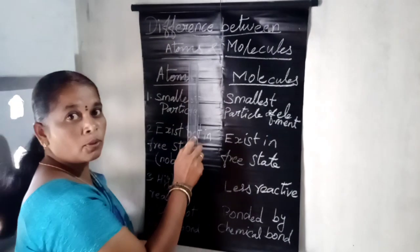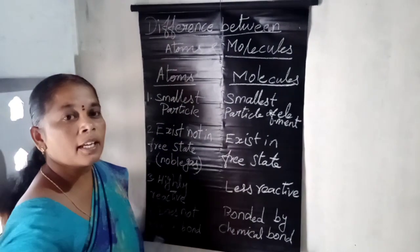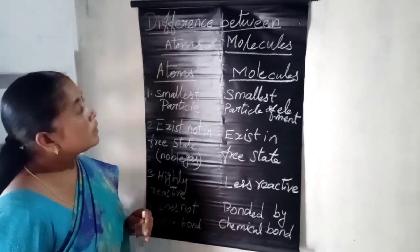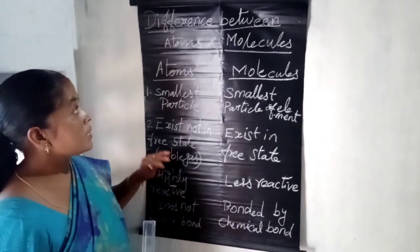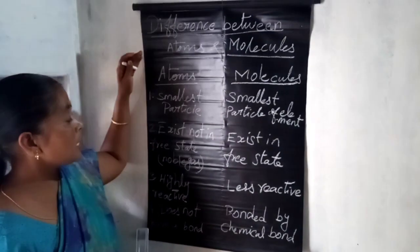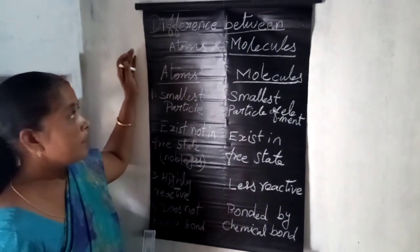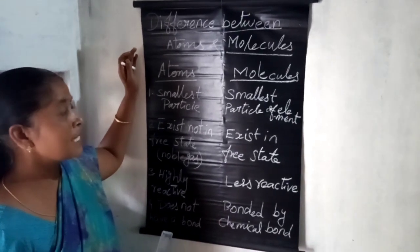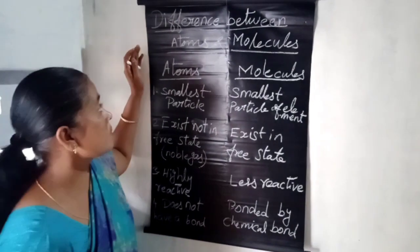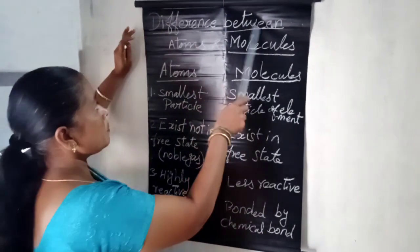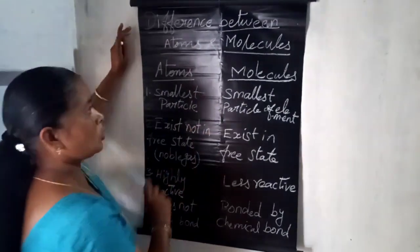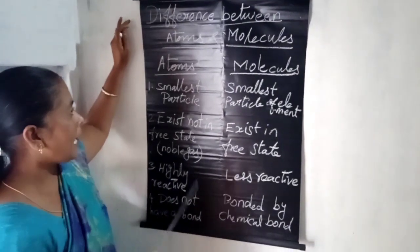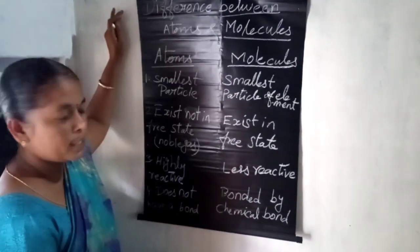Good morning students. Today we are going to see about 9th and 10th standard Unit 7: Atoms and Molecules. Today's topic is the difference between atoms and molecules.